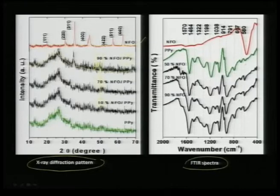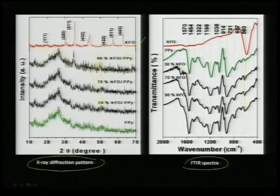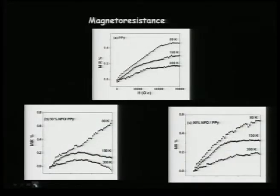The infrared spectra also gives a clue about the band corresponding to the nickel-oxygen bond characteristic of NFO in the NFO-PPY matrix. One can make quite a bit of composite material with a wide range of loading capacity and see whether this gives pronounced GMR. Polypyrrole itself, which is a metallic polymer, shows a positive magnetoresistance of less than 1 percent, though it shows more significant MR at 80 K.